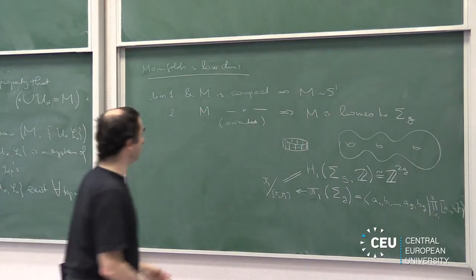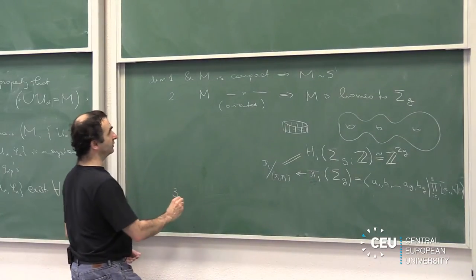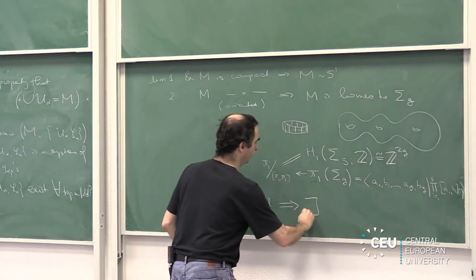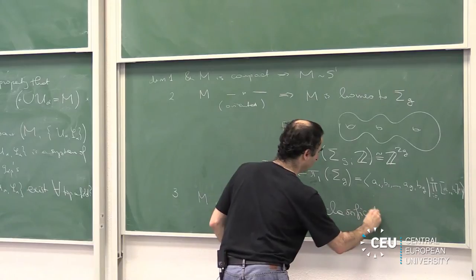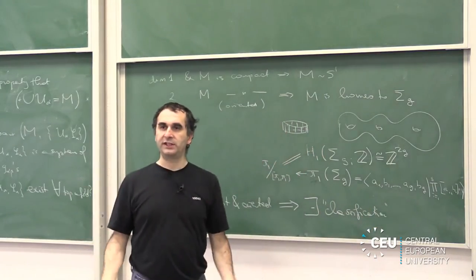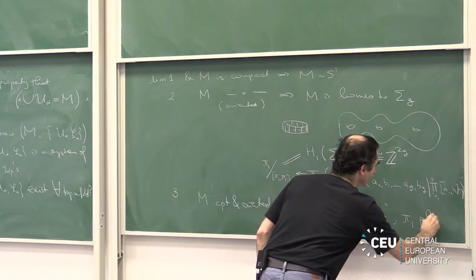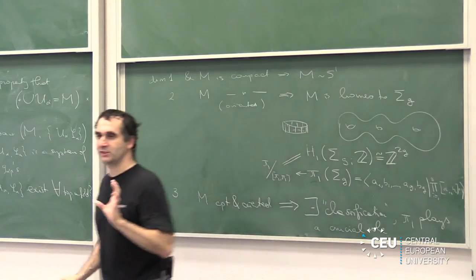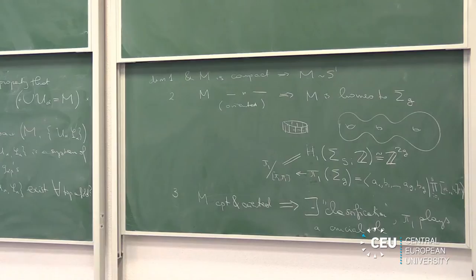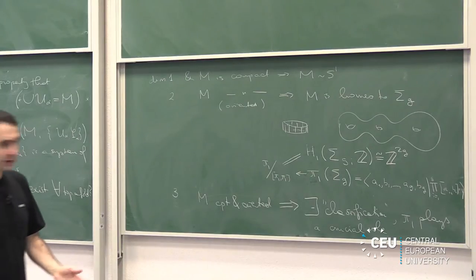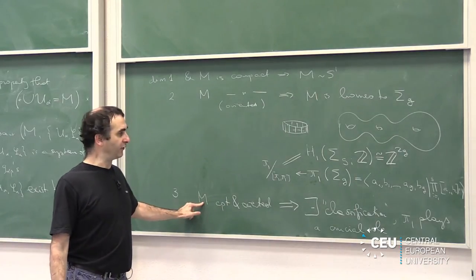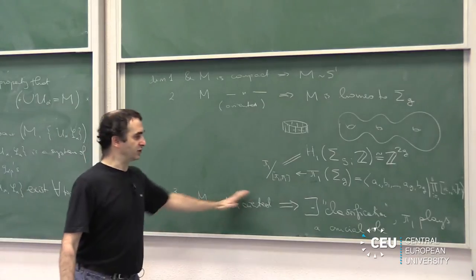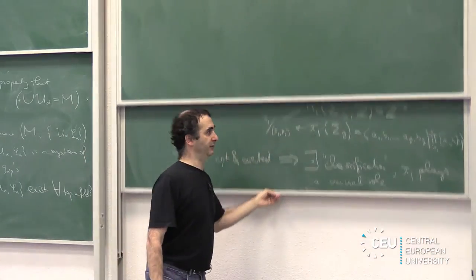What happens in dimension three? Suppose M is compact and oriented. There is a classification — or more precisely a description — of three-dimensional manifolds, and pi_1 plays a crucial role. A few years back you heard about the big revolution by the work of Perelman, who proved that in fact there is a single three-manifold which has the same fundamental group as the three-sphere, and that manifold is the three-sphere. With the same technique, they got a pretty good understanding of three-manifolds.